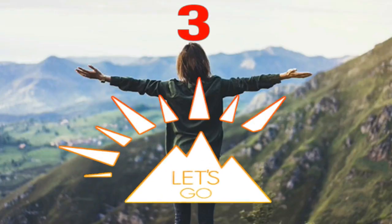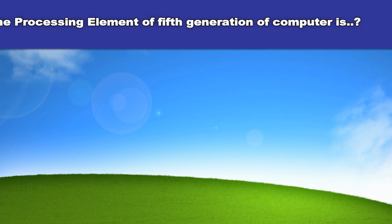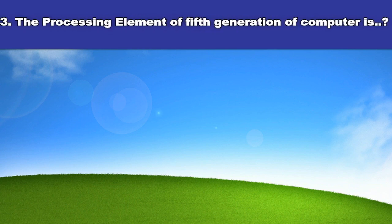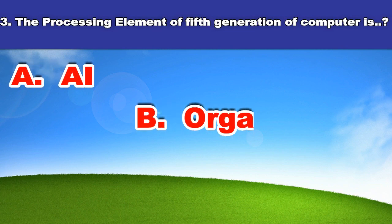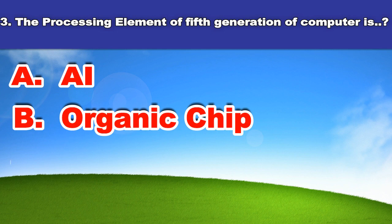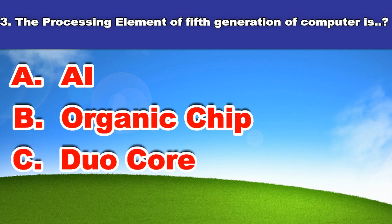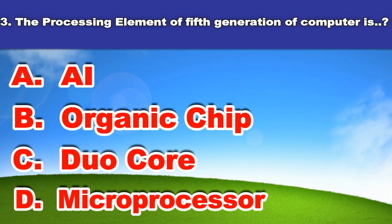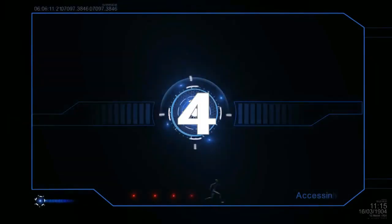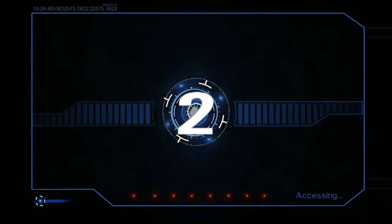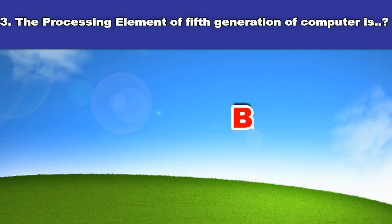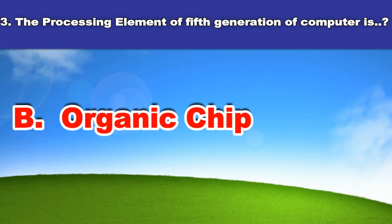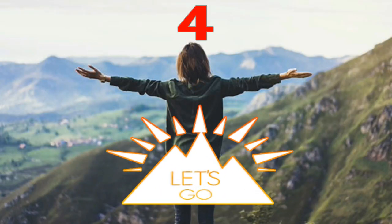Third question. The processing element of the fifth generation of computers is: A. AI, B. AI, C. Organic chip, D. Duo core, Microprocessor. And the answer is: Organic chip.